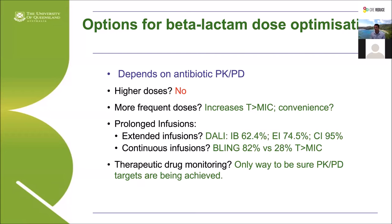Prolonged infusions — both extended and continuous — dramatically increase the likelihood of achieving a therapeutic target. Data from the BLING1 study of 60 patients showed that 100% time above MIC was achieved in 82% of patients in the continuous infusion group versus only 28% in the bolus dosing group.